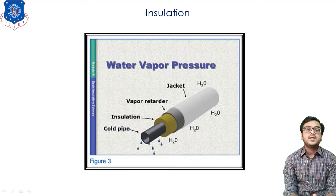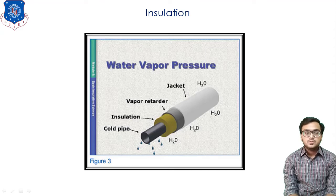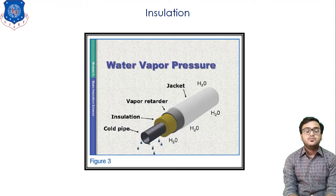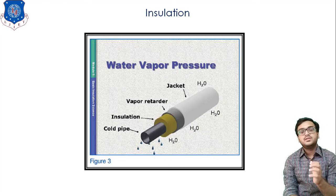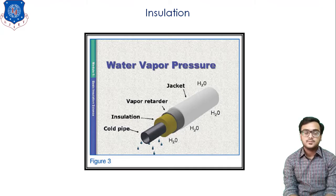Insulation has two types. The first is hot insulation, which is used to avoid the rejection of heat — for example, in a thermal power station we provide insulation over the piping network that carries steam, to avoid heat loss from the steam. The second is cold insulation, which is applied to pipes in order to avoid heat gain from the surroundings — for example, in refrigeration and air conditioning, the pipe connecting the expansion valve and the evaporator is insulated with copper pipe so that the refrigerant does not gain heat from the surroundings.